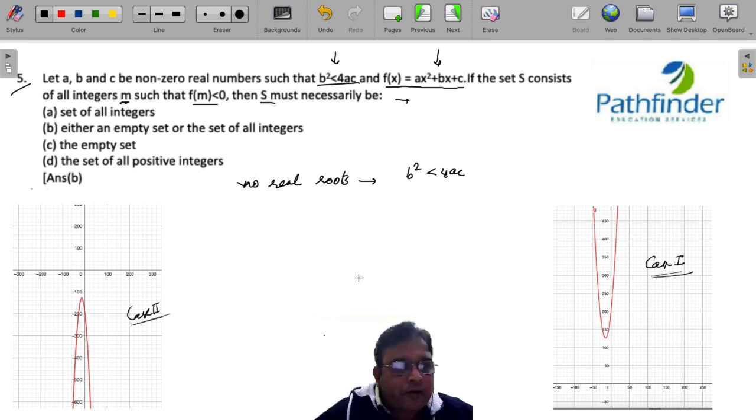Correct? So if you plot all values of integer M such that or if you create a set of all integers M such that f(M) is equal to 0. If your quadratic polynomial is like that in case 1, then this will contain an empty set because there are no integers for which the value of f(M) is less than 0.